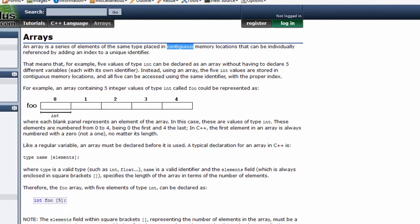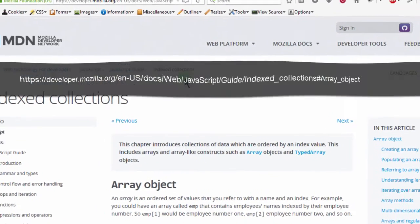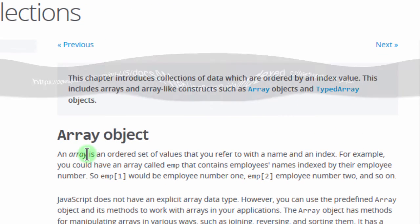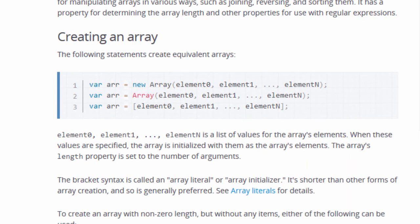And if I come to JavaScript on MDN, Mozilla Developer Network, they say an array is an ordered set of values that you refer to with the name and an index. Similarly, the same thing.